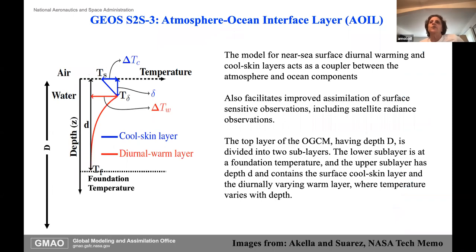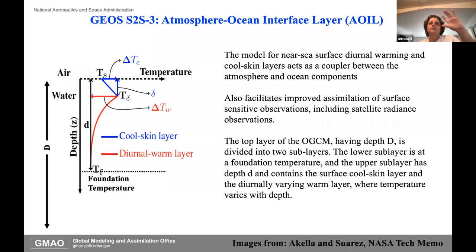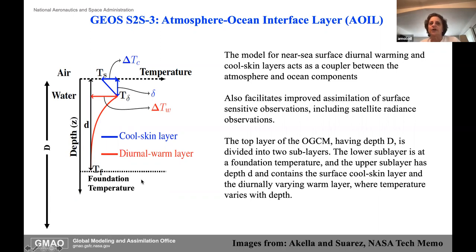I talked about this atmosphere-ocean interface layer, which really helps with the vertical resolution of the system, so we went with this for our version three. The idea is you take the top level of the ocean model and break it up into a cool skin layer, a diurnal warming layer, and then a decay down to what we're calling the foundation temperature—allowing us to capture the diurnal cycle. There's a tech memo by Akella and Suarez that describes all of this.